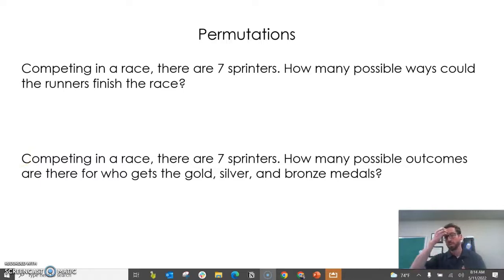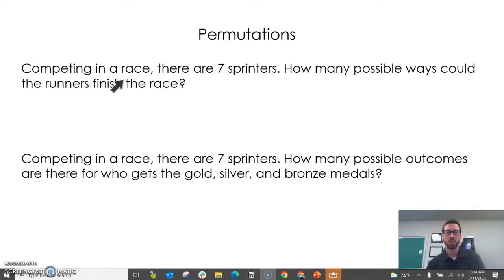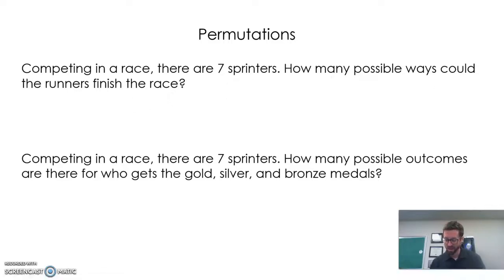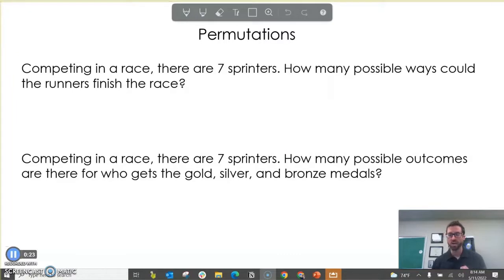But first, when we're looking at permutations, we need to understand something called the factorial rule of counting, which I covered in my previous video. But to refresh on it: competing in a race, there are seven sprinters. How many possible ways could the runners finish the race? We find the number of orderings of something — this is a type of permutation — because if we look at first place, there are seven options for who could get first place.